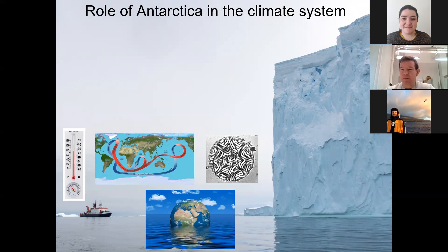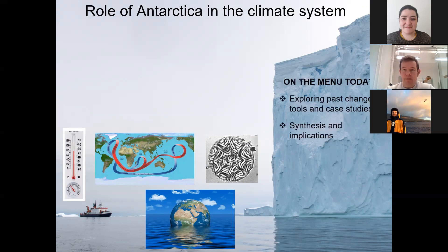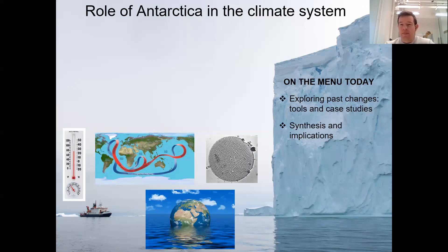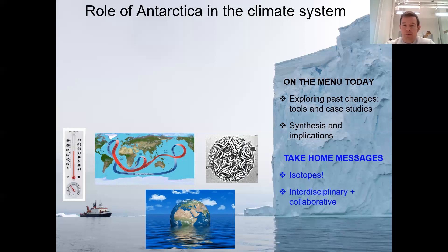Perhaps most obviously, the ice sheet locks up freshwater and so changes global sea levels. I'm mostly going to talk about how we can explore past changes in the Antarctic ice sheet using a series of different tools, with a little case study to introduce each. I'll spend most of the time on those, and just at the end give some kind of synthesis and discuss some of the implications. Notably, I'm an isotope geochemist first and foremost, so a lot of these tools come from isotope geochemistry. It's also a particularly interdisciplinary and collaborative field.